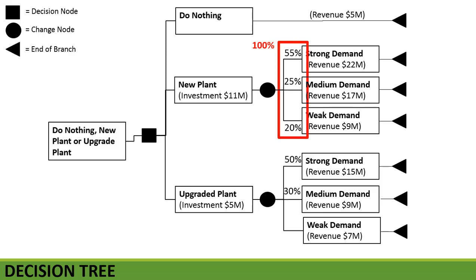For the new plant's probabilities: strong demand is 55 percent, medium demand is 25 percent, and weak demand is 20 percent — probabilities always sum to 100 percent. For upgrading the plant we have a 50 percent probability for strong demand and a 30 percent probability for medium demand. We need to calculate the probability for weak demand: 50 plus 30 is 80, so the probability for weak demand is 20 percent.